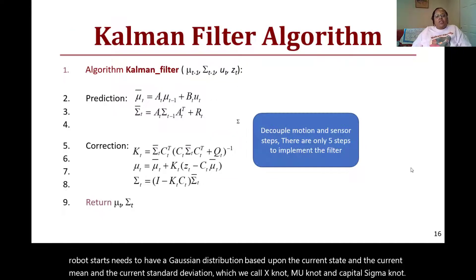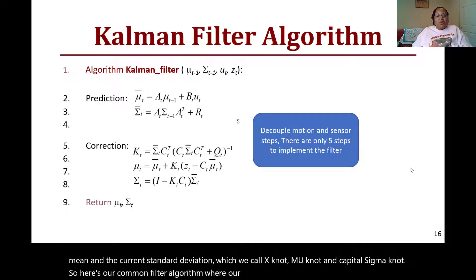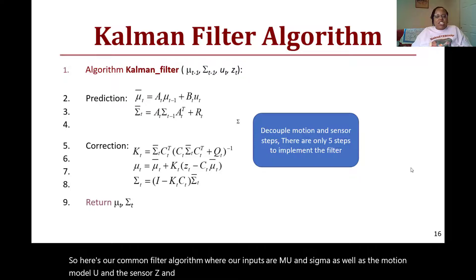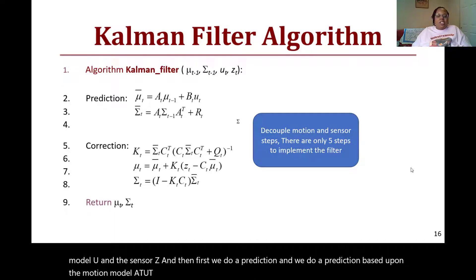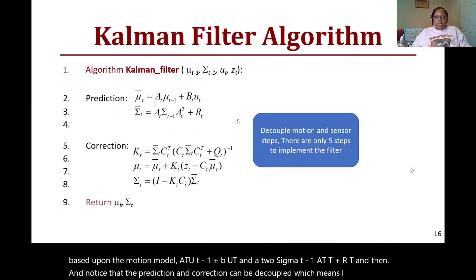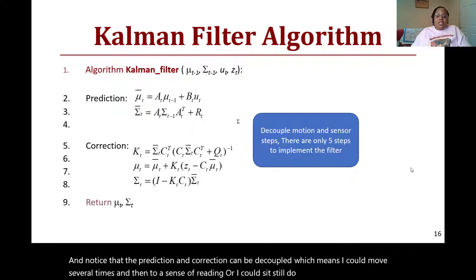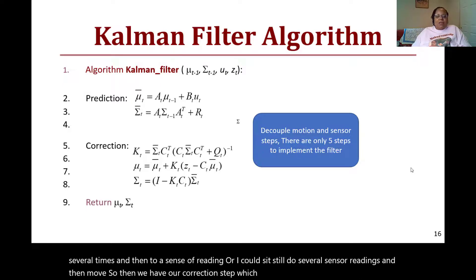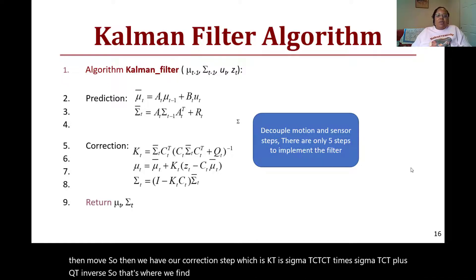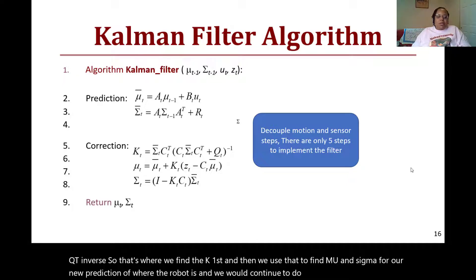Here's our Kalman filter algorithm where our inputs are μ and Σ as well as the motion model u and the sensor z. First we do a prediction based upon the motion model: A*u_(t-1) + B*u and A*Σ_(t-1)*A^T + R_t. Notice that the prediction and correction can be decoupled, which means I could move several times and then do a sensor reading, or I could sit still, do several sensor readings, and then move. Then we have our correction step, which is K_t = Σ_t*C^T*(C*Σ_t*C^T + Q_t)^(-1). That's where we find the K first, and then we use that to find μ and Σ for our new prediction of where the robot is. We would continue to do this as we move through the model, and from there we return our μ and Σ for our new predicted and corrected step.